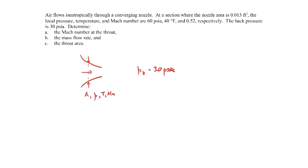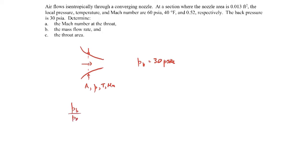First, we want to check whether or not this flow is choked — we want to know if the Mach number at the exit is equal to one. If the flow is choked, the Mach number at the throat will equal one; if not, it'll be a subsonic value. If it's not choked, the exit pressure will equal the back pressure. So let's check the pressure ratio at the exit: we want to see if P_B over P₀ is less than or equal to P* over P₀.